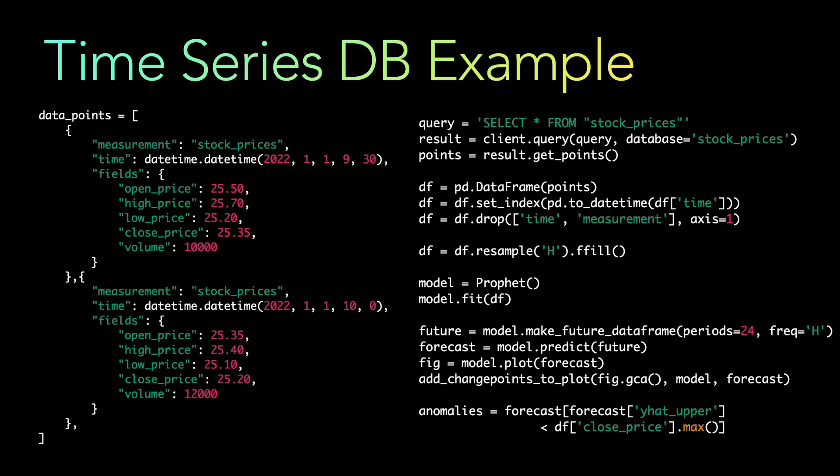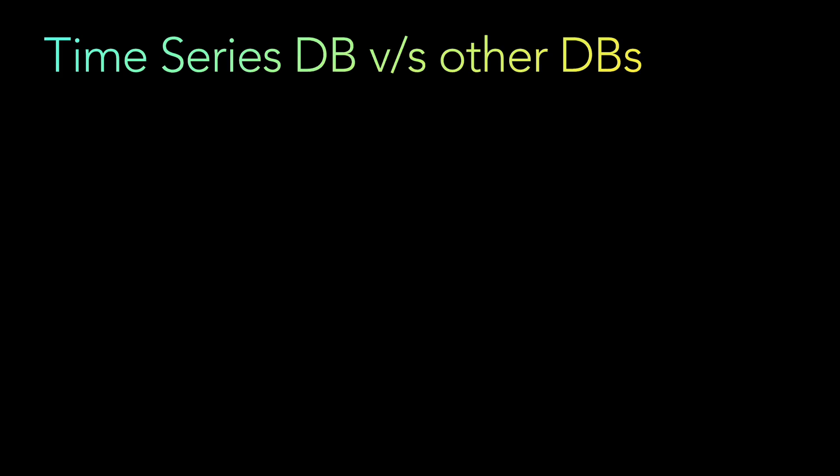Now let's look at how time series databases differ from other databases and their key features. First is the data structure — time series databases are specifically designed to store and organize timestamp-based data in a way that makes it easy to query and analyze. This typically involves storing data in columnar format, which is optimized for time-based access patterns.